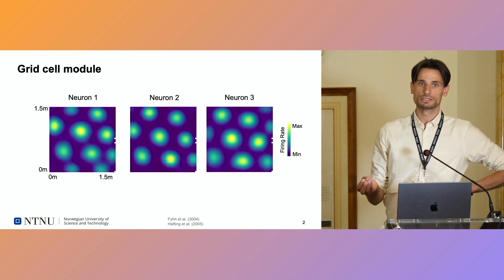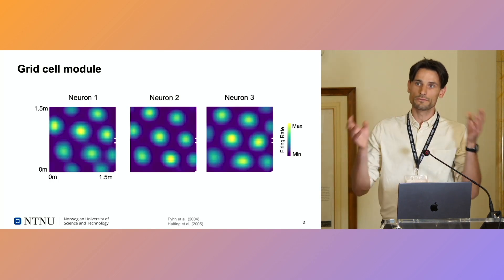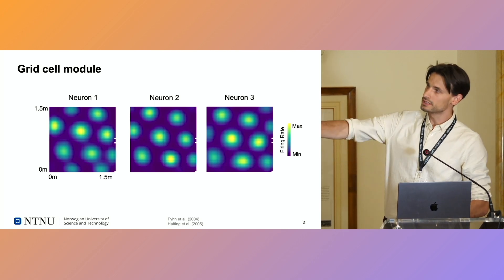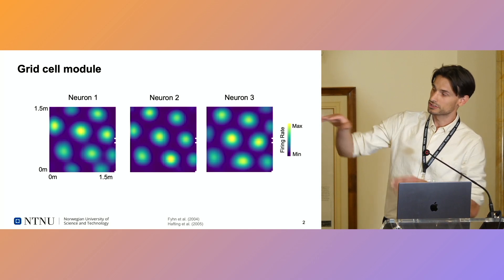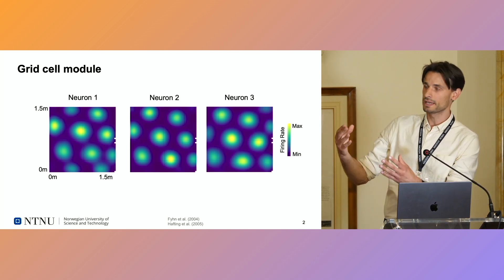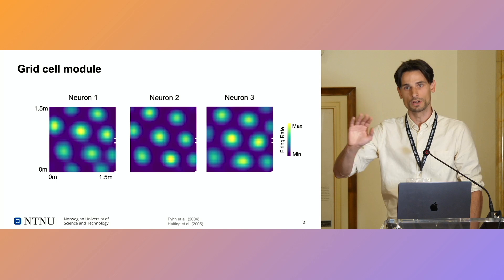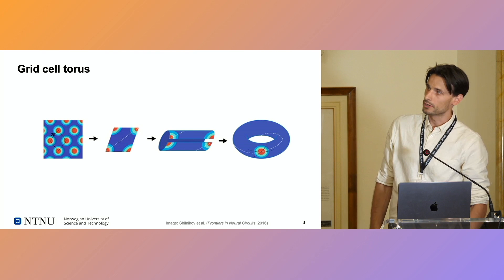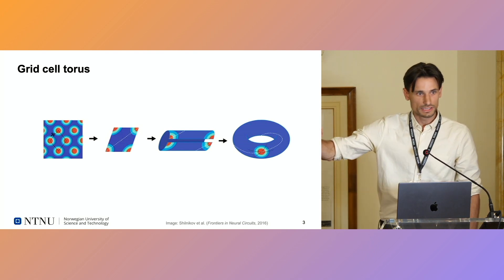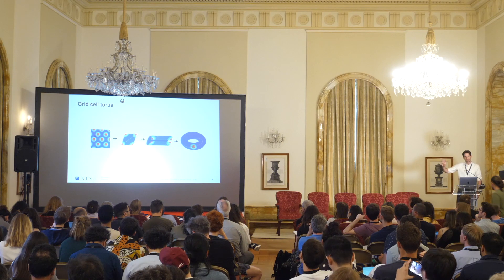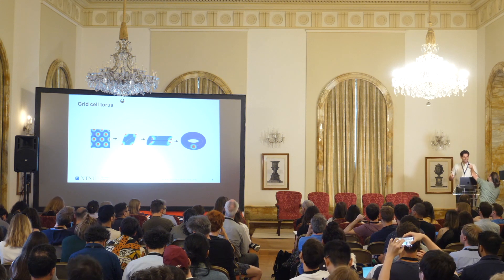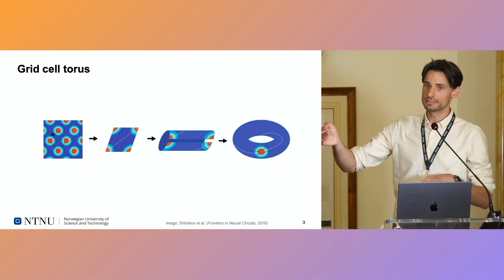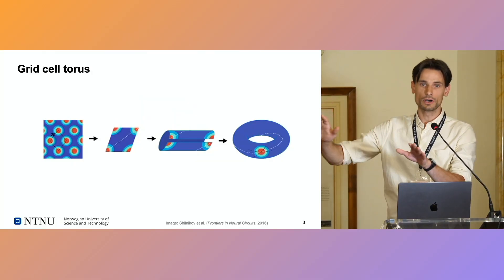A grid cell module is usually defined as a group of grid cells which share a hexagonal grid-like pattern. These grid cells share an orientation and a spacing, but are spatially offset from one another. If we look at this repetitive fundamental tile — the rhombus — we can see that each cell encodes a distinct location within this rhombus.